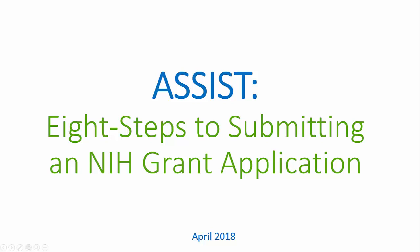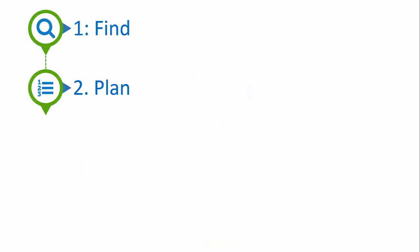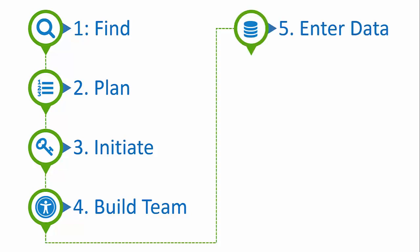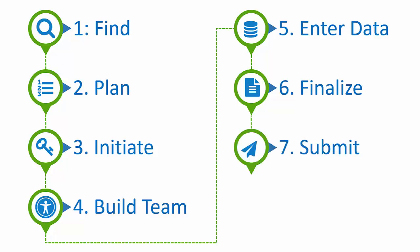There are eight steps to submitting an NIH grant application using ASSIST: find an opportunity, make a submission plan, initiate your application, provide application access to appropriate team members, enter your application data, finalize your application and prepare for submission, submit your application, and finally track your application status through to eRA Commons. Let's look at each step one by one.